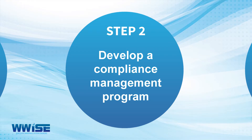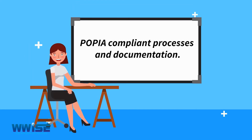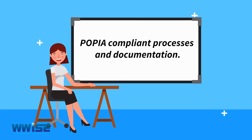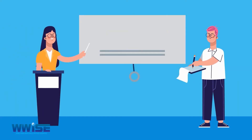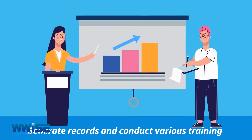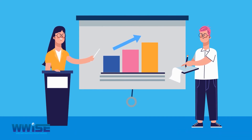Step 2: Develop a compliance management programme — we develop POPIA compliant processes and documentation. Step 3: Monitoring and training — we help you to generate records and conduct various training interventions to ensure an adequate level of understanding and compliance.